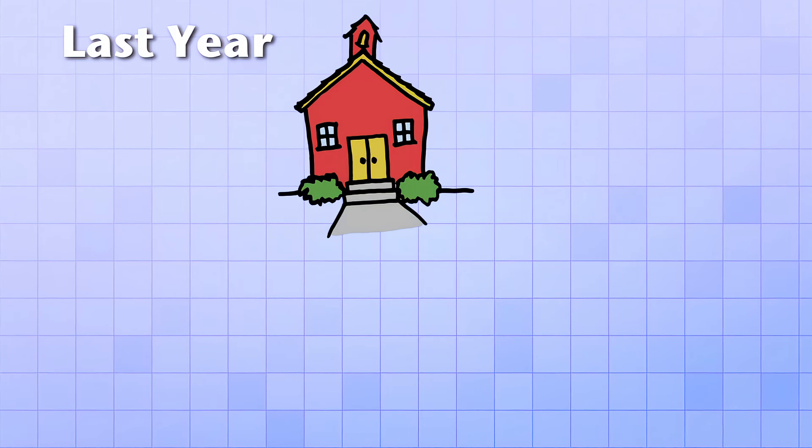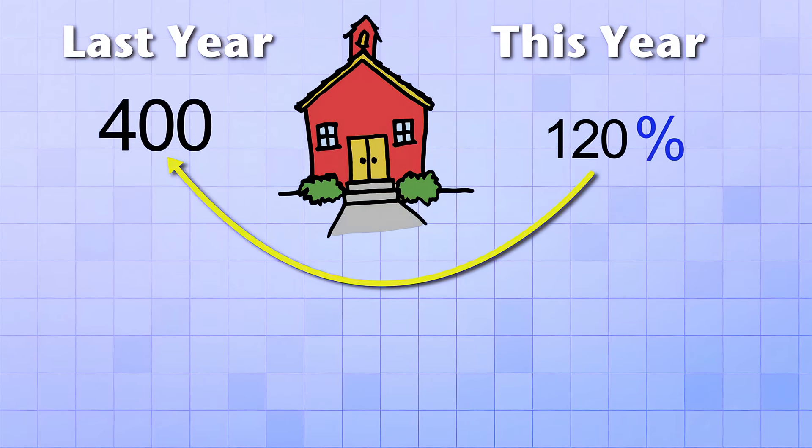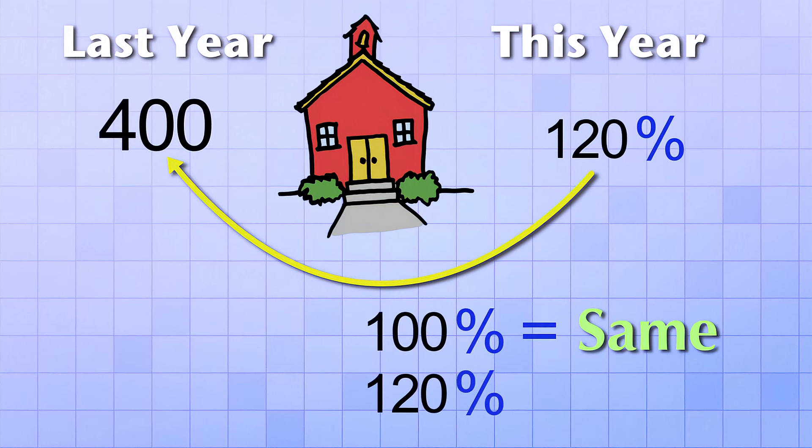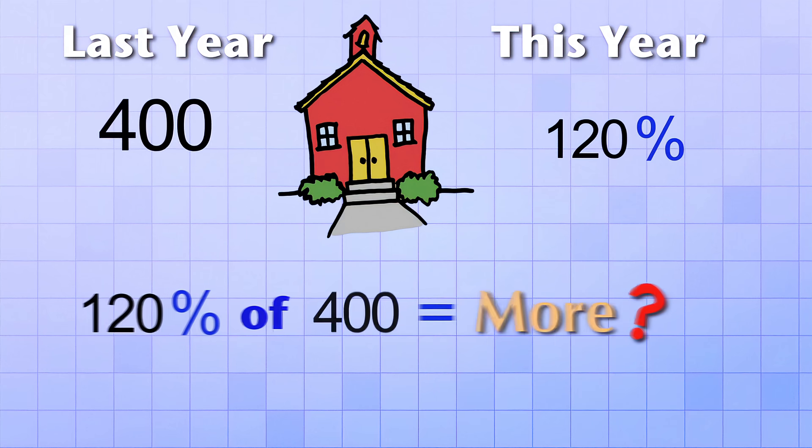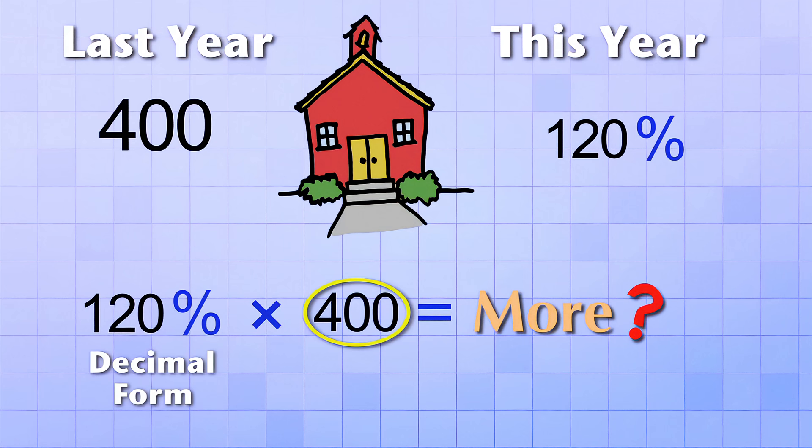Suppose that last year your school had 400 students, but this year it has 120% of that amount. Well, 100% would mean the exact same number of students as last year. So 120% must mean that there's more students now. But how many students? To find out, we need to calculate what 120% of 400 is. Great! We know just how to do that. We just multiply 400 by the fraction form or the decimal form of 120%. Let's use the decimal form again.